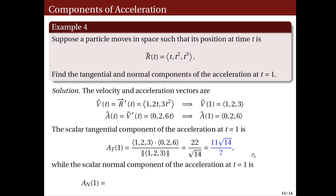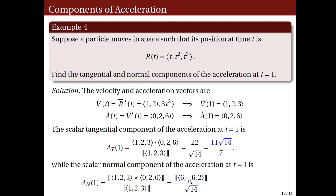On the other hand, the normal component at t equals 1 is the norm of the cross product of V(1) and A(1) over the norm of V(1). Computing the cross product (1, 2, 3) cross (0, 2, 6) gives the vector (6, −6, 2). The norm of (1, 2, 3) is the square root of 14. Computing the norm of (6, −6, 2), we get the square root of 76, so the normal component equals the square root of 76 over the square root of 14, which simplifies to the square root of 266 over 7. This is the normal component of acceleration at t equals 1.